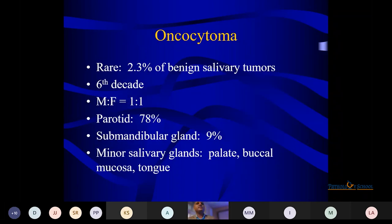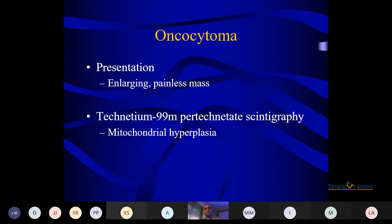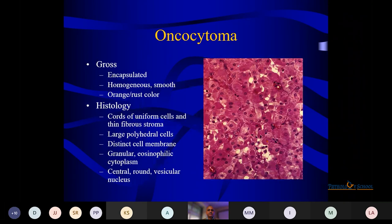Oncocytoma — as the name suggests, whether it is in the thyroid, salivary gland, or kidney, the features are the same: benign large cells. In the salivary gland, it is common in the 6th decade, equally affecting men and women, with the parotid being the commonest site. Oncocytoma presents as an enlarging painless mass. Technetium scan shows mitochondrial hyperplasia. On gross specimens, they are encapsulated, homogeneous, smooth, with an orange-rust color. Histologically, cores of uniform cells with thin fibrillar stroma are seen. Large polyhedral cells with distinct cell membranes and granular eosinophilic cytoplasm are due to abundant mitochondria. A central ground-glass nucleus is present.